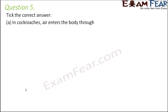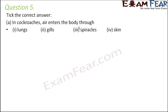Question number five: in cockroaches, air enters the body through what? Cockroaches are insects, and insects do not have lungs or gills. They have spiracles, which are openings present at one end of the trachea. Just like we have nostrils which connect us to the lungs, spiracles connect to the trachea of insects.